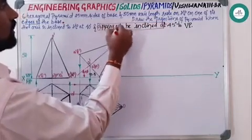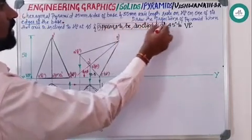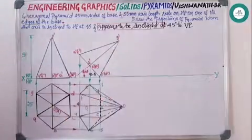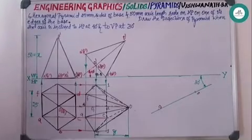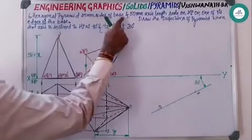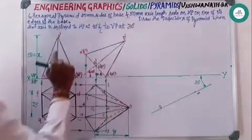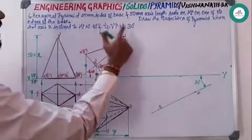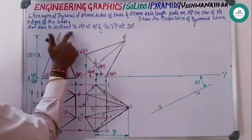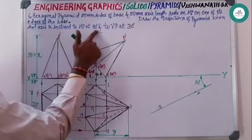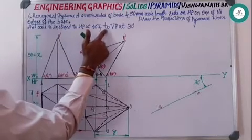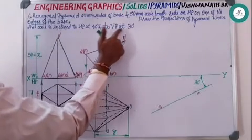Then this is your beta case problem. Re-changing the question: a hexagonal pyramid with 25 mm base and 50 mm axis length—it remains the same. Draw the projection of the pyramid when the axis is inclined to HP at 40 degrees and to VP at 30 degrees. If this is the case, it is a beta case problem.